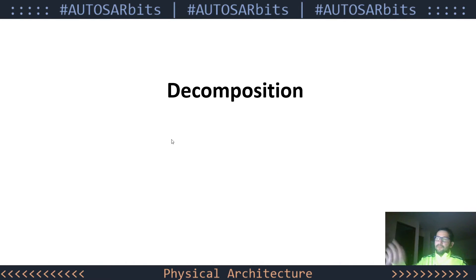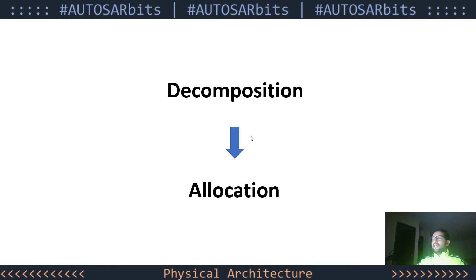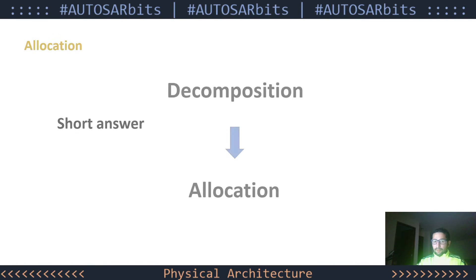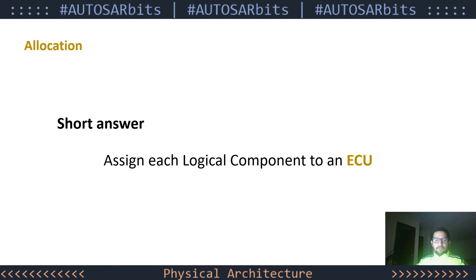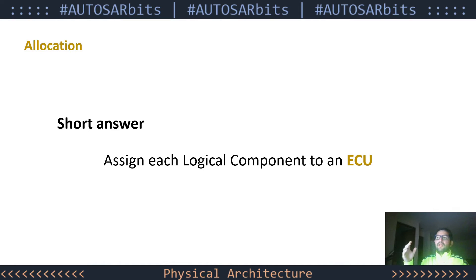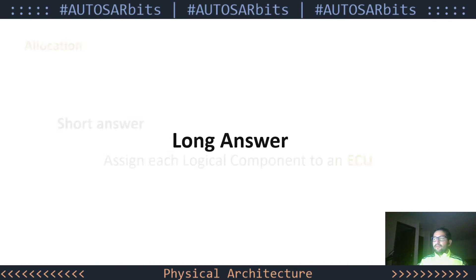After the decomposition, the next logical step will be to work on the allocation. So what is allocation? The short answer is: assign each logical component to an ECU. But here in these videos we want a further explanation — the long answer — and with that we're going to explain the principles of the design of Autosar.